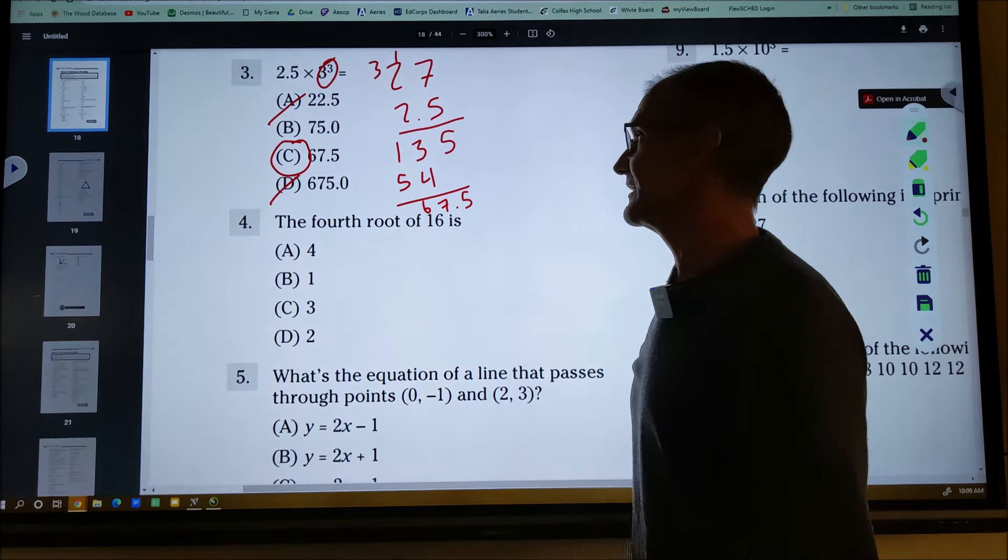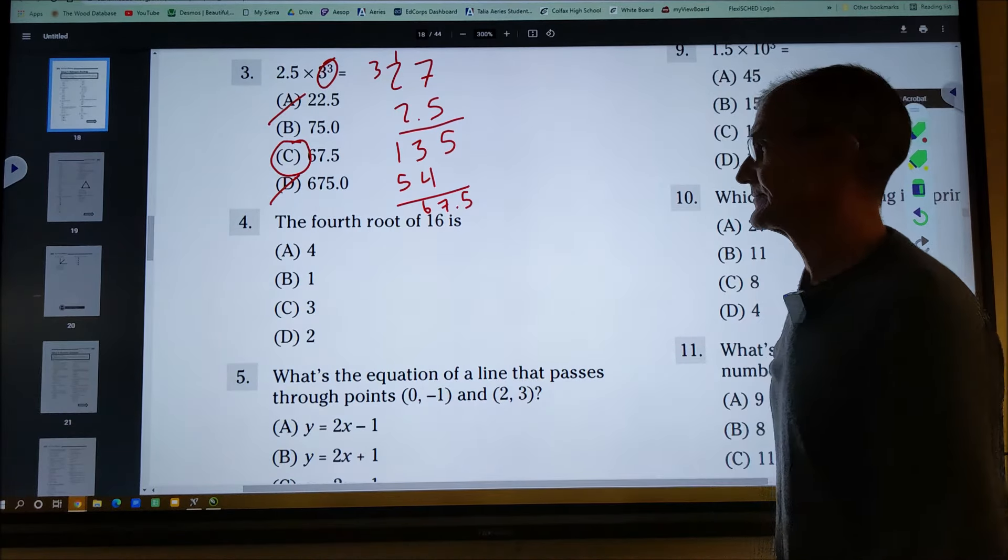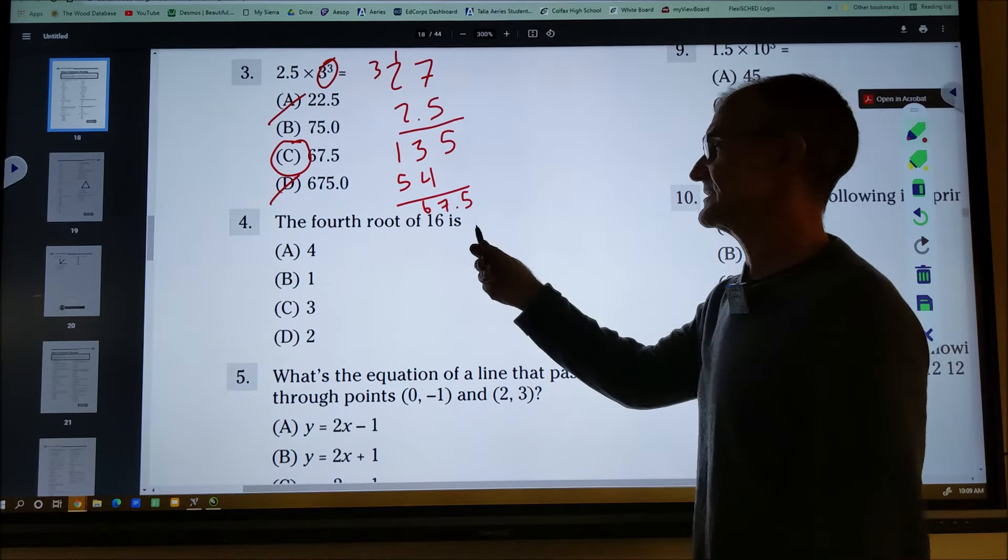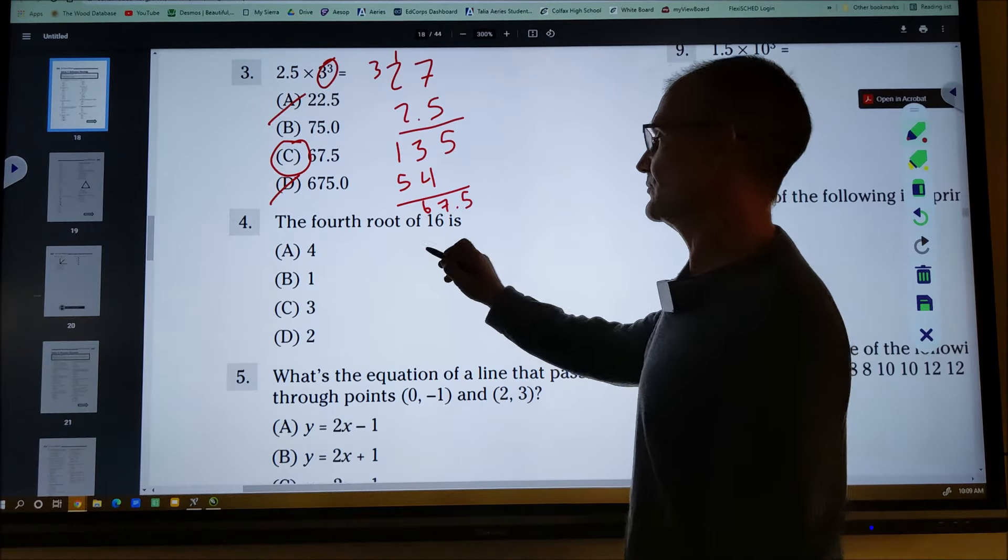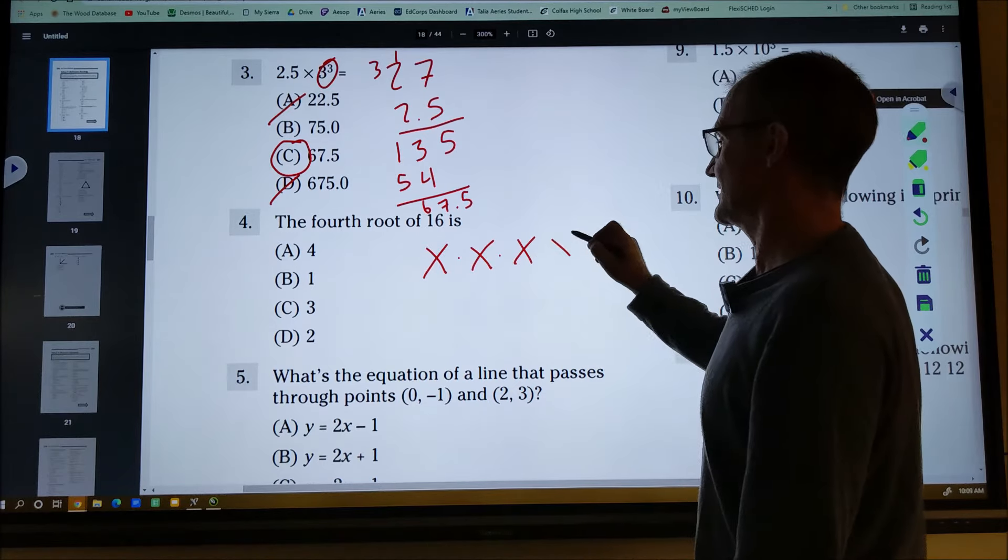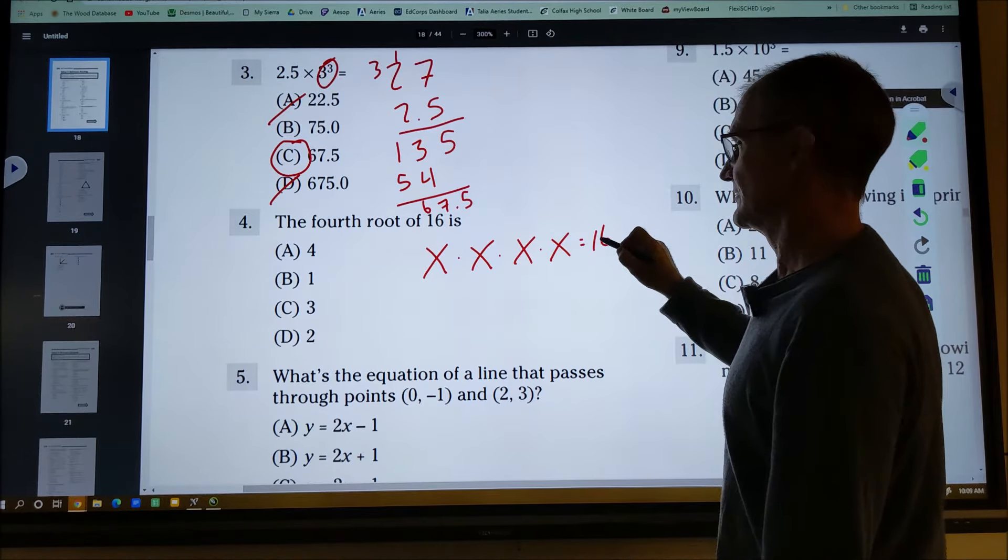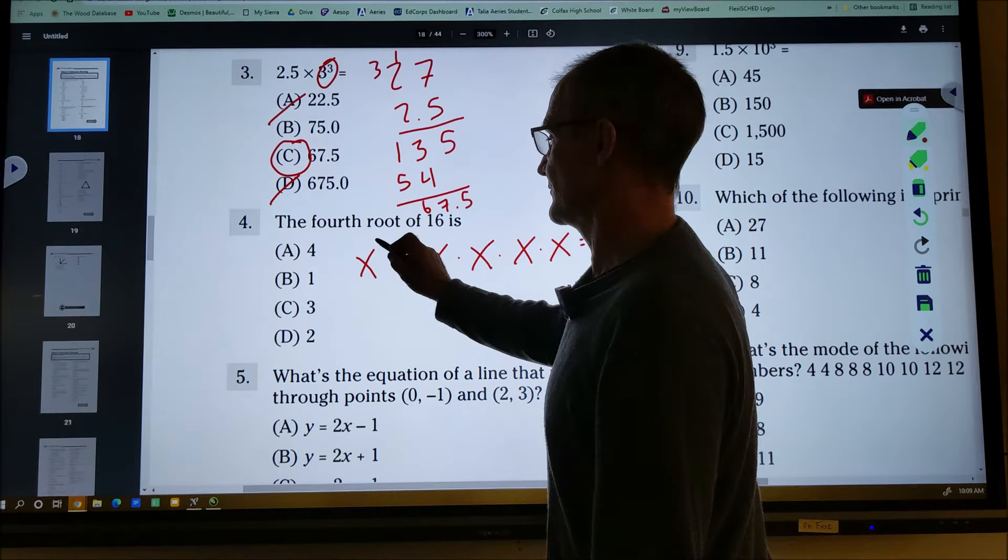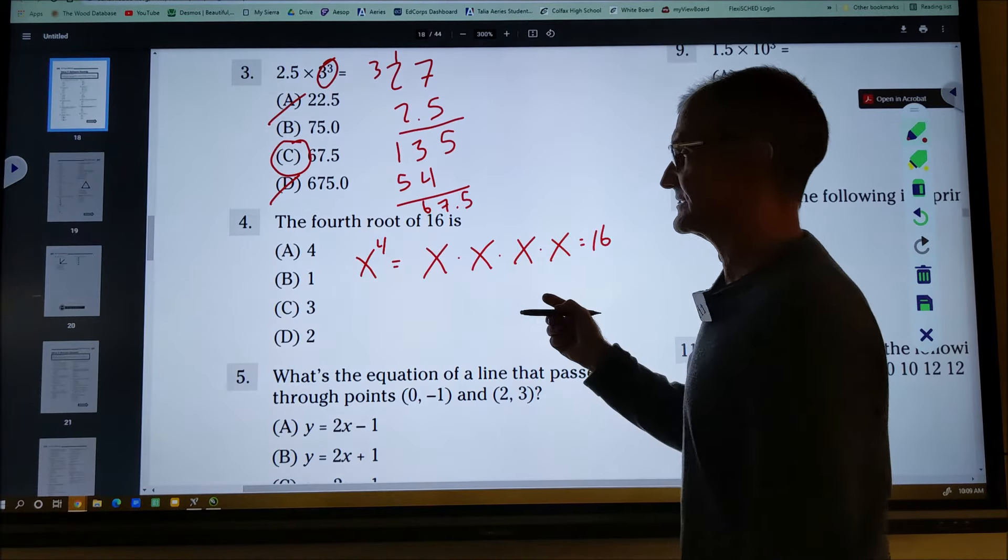75 was too high. I probably could have eliminated that one. The fourth root of 16 is, well, that's saying what times itself times itself times itself is equal to 16. Or what to the fourth power is equal to 16.